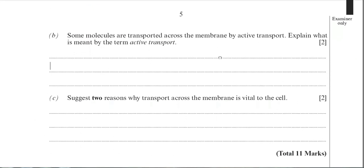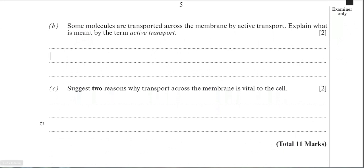So there's two more parts to this question. Part B: some molecules are transported across the membrane by active transport. Explain what is meant by the term active transport. It's worth two marks. Not a particularly difficult question. It's the movement of a substance against the concentration gradient, which means the molecule is moved from a low concentration to a higher concentration. That's what it means by against the concentration gradient.